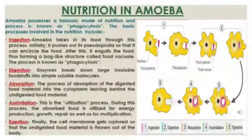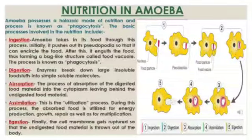We will now talk about amoeba. Amoeba is a unicellular organism that takes its food by the heterotrophic mode of nutrition, specifically the holozoic mode of nutrition. The process of taking in food by amoeba is known as phagocytosis, as shown in the picture.